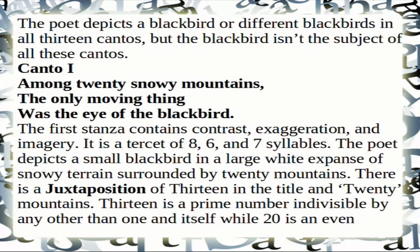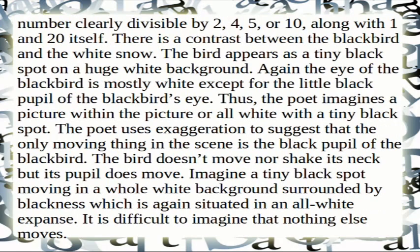Canto 1: 'Among twenty snowy mountains, the only moving thing was the eye of the blackbird.' The first stanza contains contrast, exaggeration, and imagery. It is a tercet of eight, six, and seven syllables. The poet depicts a small blackbird in a large white expanse of snowy terrain surrounded by 20 mountains. There is a juxtaposition of 13 in the title and 20 mountains — 13 is a prime number, while 20 is an even number divisible by 2, 4, 5, or 10.